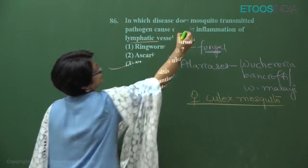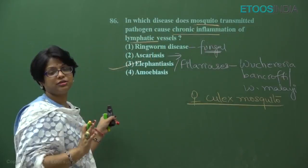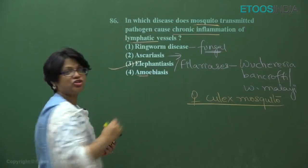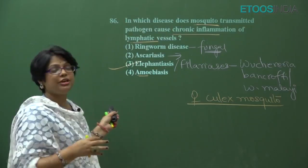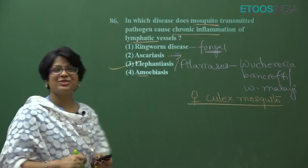Elephantiasis fulfills both criteria: it is transmitted by mosquito and causes chronic inflammation of lymphatic vessels. Amebiasis is caused by Entamoeba histolytica and is transmitted by ingestion of food and water contaminated with cysts. The other three options — one, two, and four — are not related to mosquito bite or the lymphatic system. The answer is option number three.